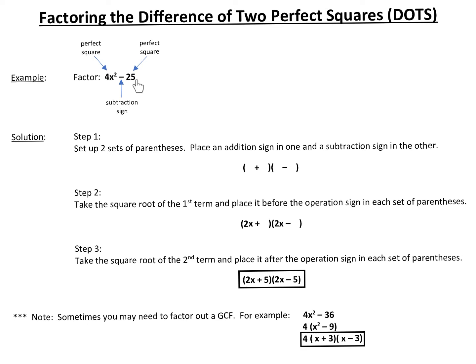Whenever you have two terms, there are one of two ways you could factor. Number one, if there's a greatest common factor, you can factor out a greatest common factor.